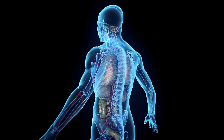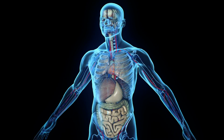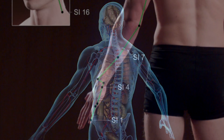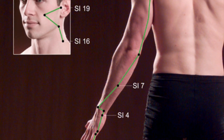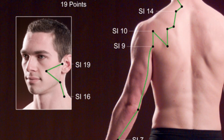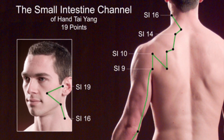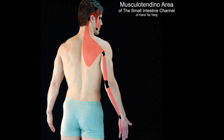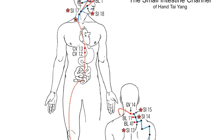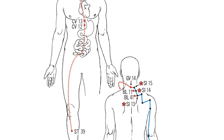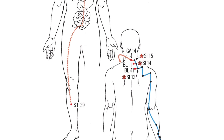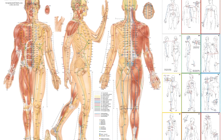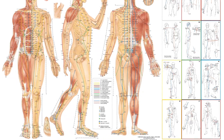Each meridian connects with muscles, tendons, bones, ligaments, and internal organs. For instance, the small intestine meridian starts in your small finger and flows all the way through your arm, shoulder, and neck, and into your ear. It affects these muscles and flows through this internal pathway, which then affects your ears, eyes, neck, heart, digestive system, stomach, leg, and knee. All the meridians affect different parts of the body, but they're all connected to each other.